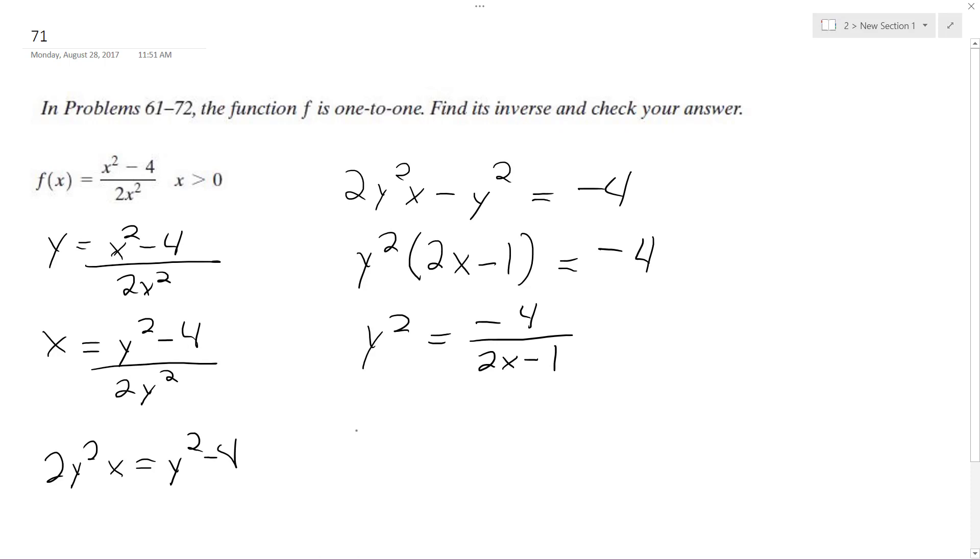Take square root. First I'm going to just, this is the same thing as 4 over 1 minus 2x. Square root. So y is going to be equal to the square root of 4 over 1 minus 2x. So here's our inverse.